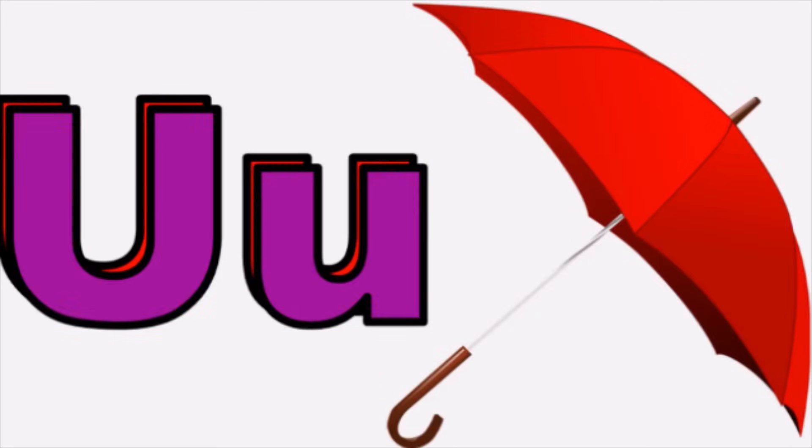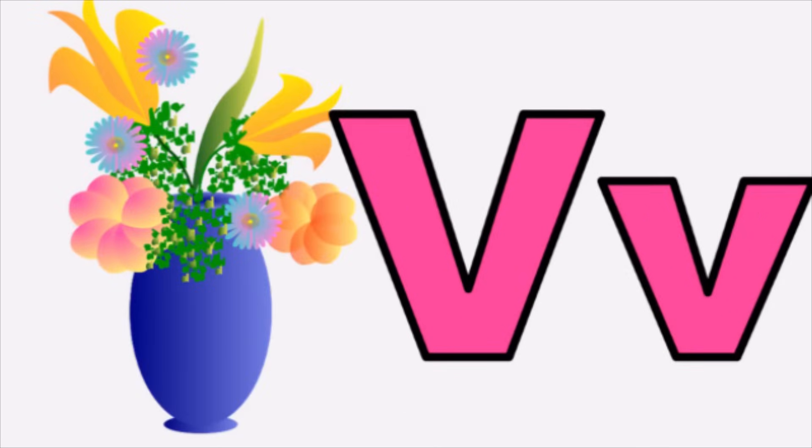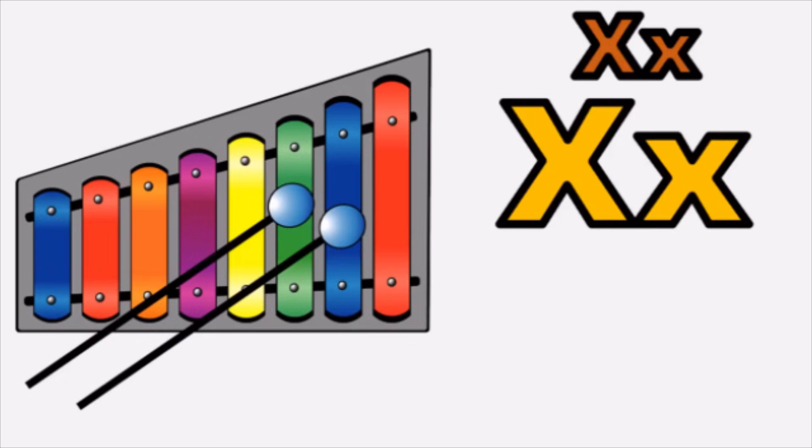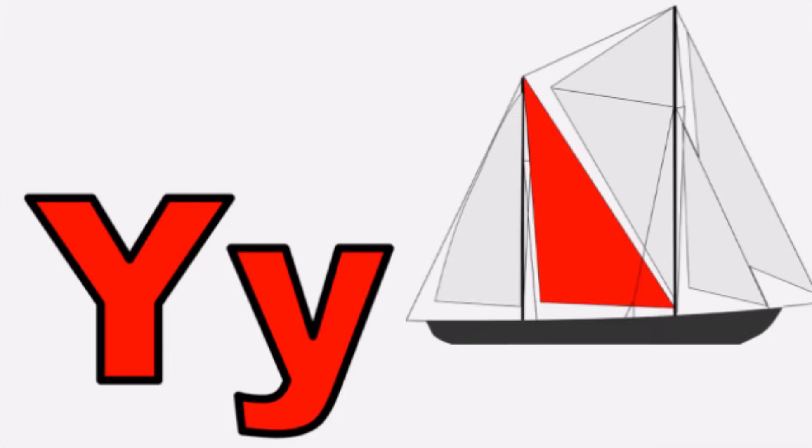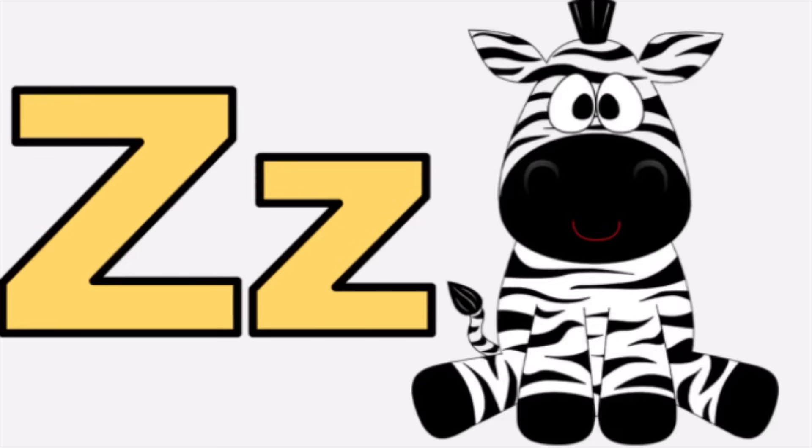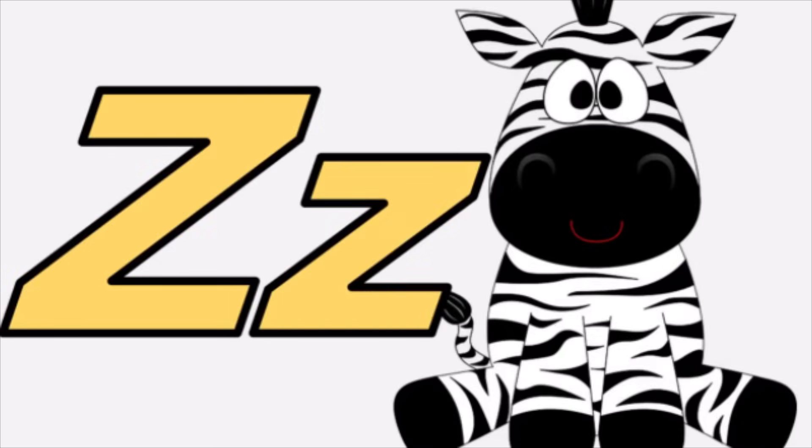U for Umbrella, u, umbrella. V for Vast, v, vast. W for Window, w, window. X for Xylophone, s, xylophone. Y for Yacht, y, yacht. Z for Zebra, z, zebra.